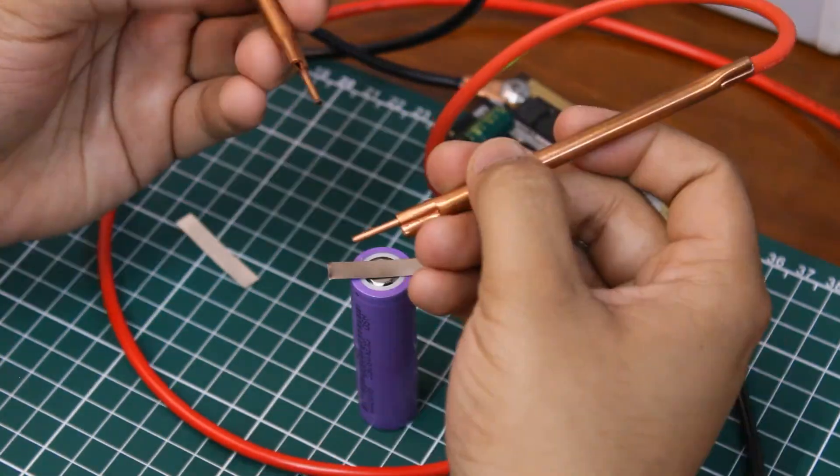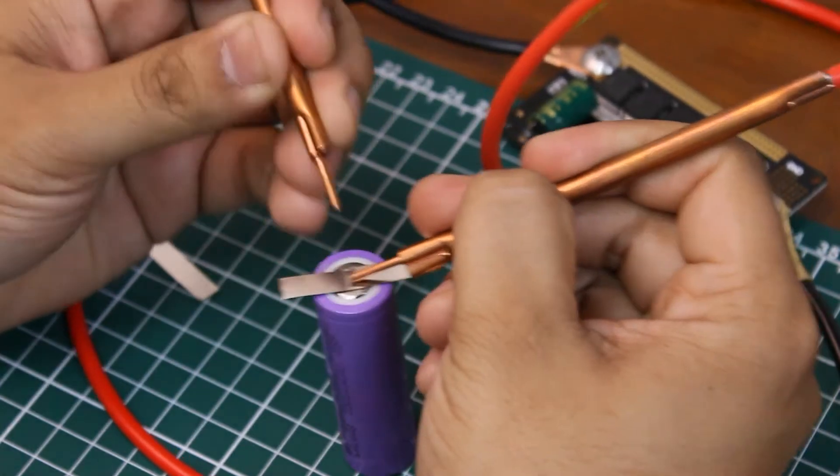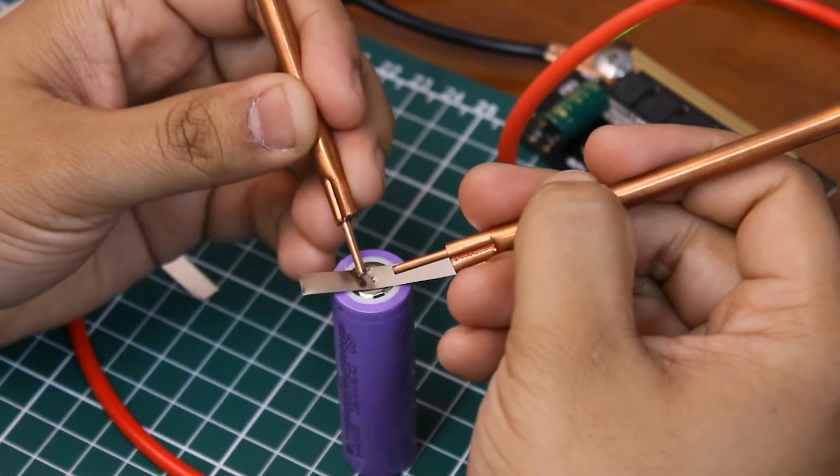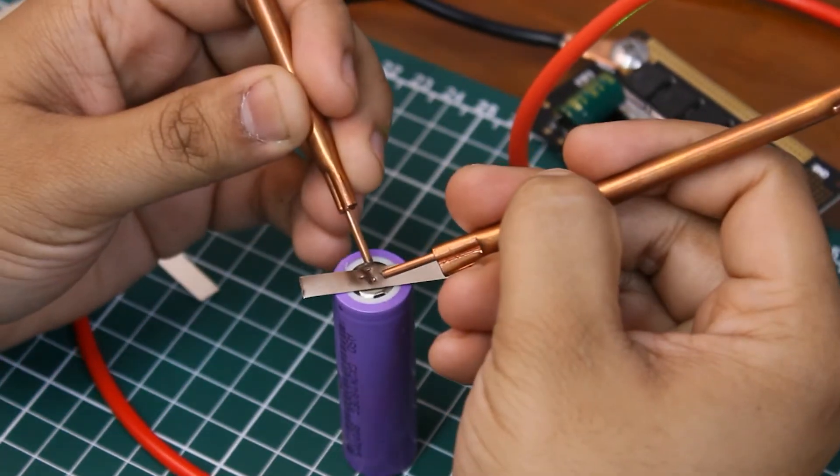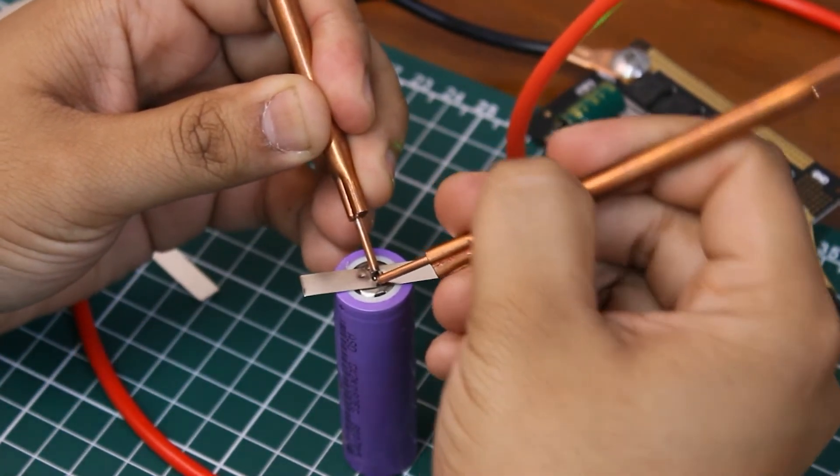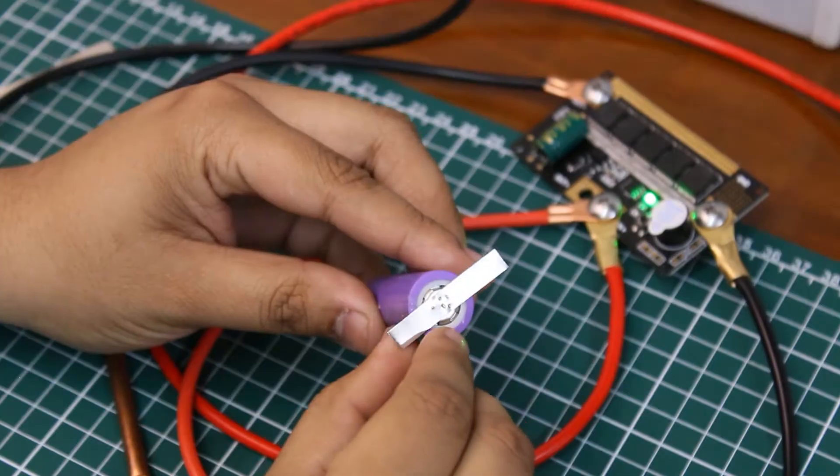Place the nickel strip on the cell and use the probes to create a weld. Once both the probes touch the strip, the circuit waits for a second and then current is flown through the probes for a very short duration. This causes the nickel strip to heat and melt, creating a weld in the region.